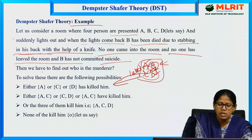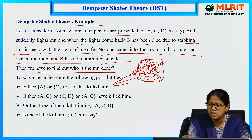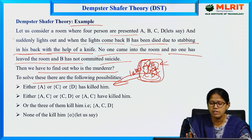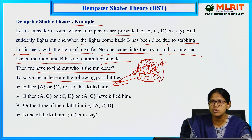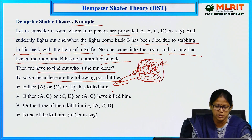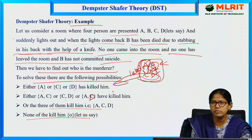We have to find out who is the murderer. Out of the 4, one has died — that is B — and 3 are left. Out of these 3, one is the murderer, or they combinedly did it. The Dempster-Shafer theory depends on belief and plausibility — it considers all the possibilities with the evidence: either A, C, or D individually, or A and C, or A and D, or all three combined, or none of them killed him.